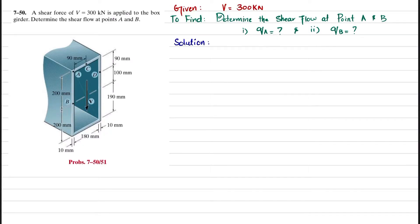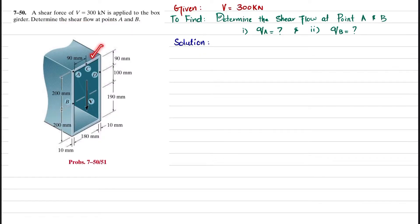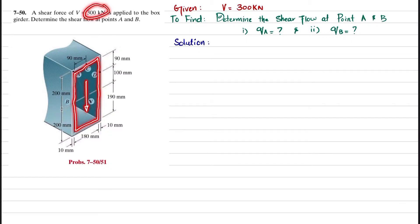Welcome back. Problem 7-50: a shear force of 300 kilonewtons is applied to the box girder. Determine the shear flow at points A and B. The box girder has a total height of 400 millimeters and total width of 200 millimeters, with an empty hollow interior. A shear force of 300 kilonewtons is applied, and we need to find the shear flow at points A and B.